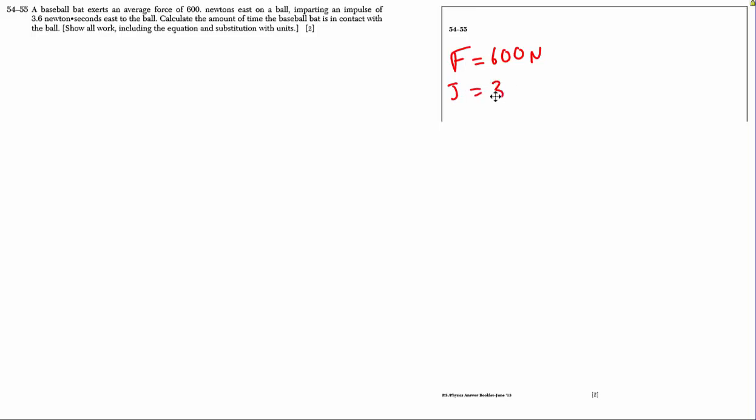We know it's going to impart an impulse of 3.6 Newton seconds, also east. We want to know how much time the ball was in contact with the bat. Hopefully you can recognize this is an impulse problem, so impulse is force times time. This equation is in your reference table. So the time is simply the impulse divided by the force, or 3.6 divided by 600. I get a time of 0.006 seconds. This will be a total of 2 points, one for the answer with units, and the other for all of the work that needs to include substitution with units, or a knowns list with units.